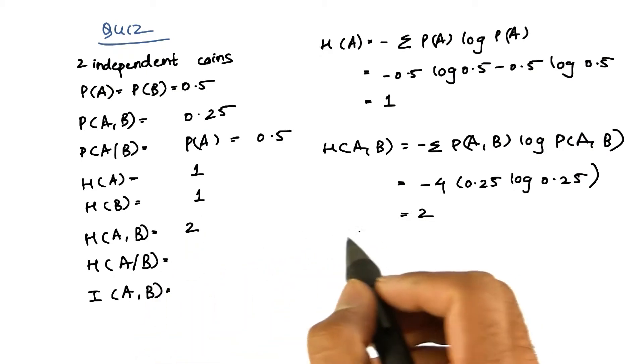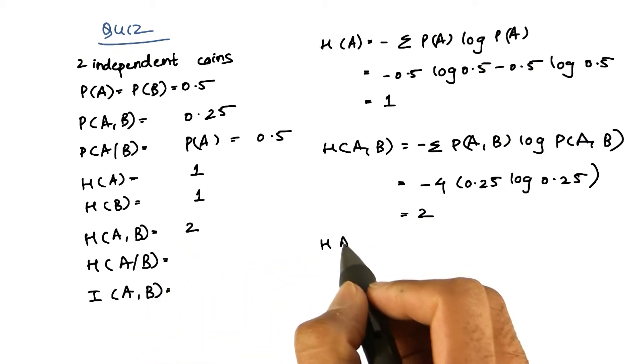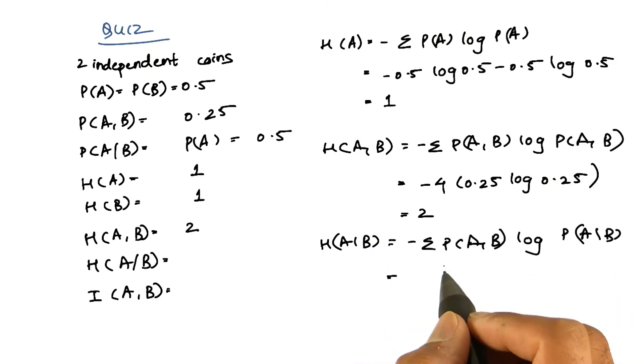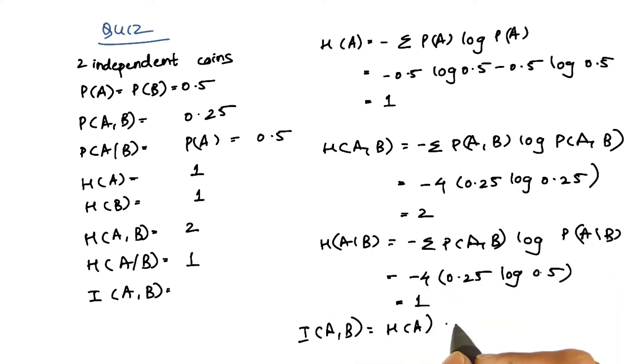What is the conditional entropy of A given B? It's given by this formula. If we substitute the values, we get the conditional entropy as 1.